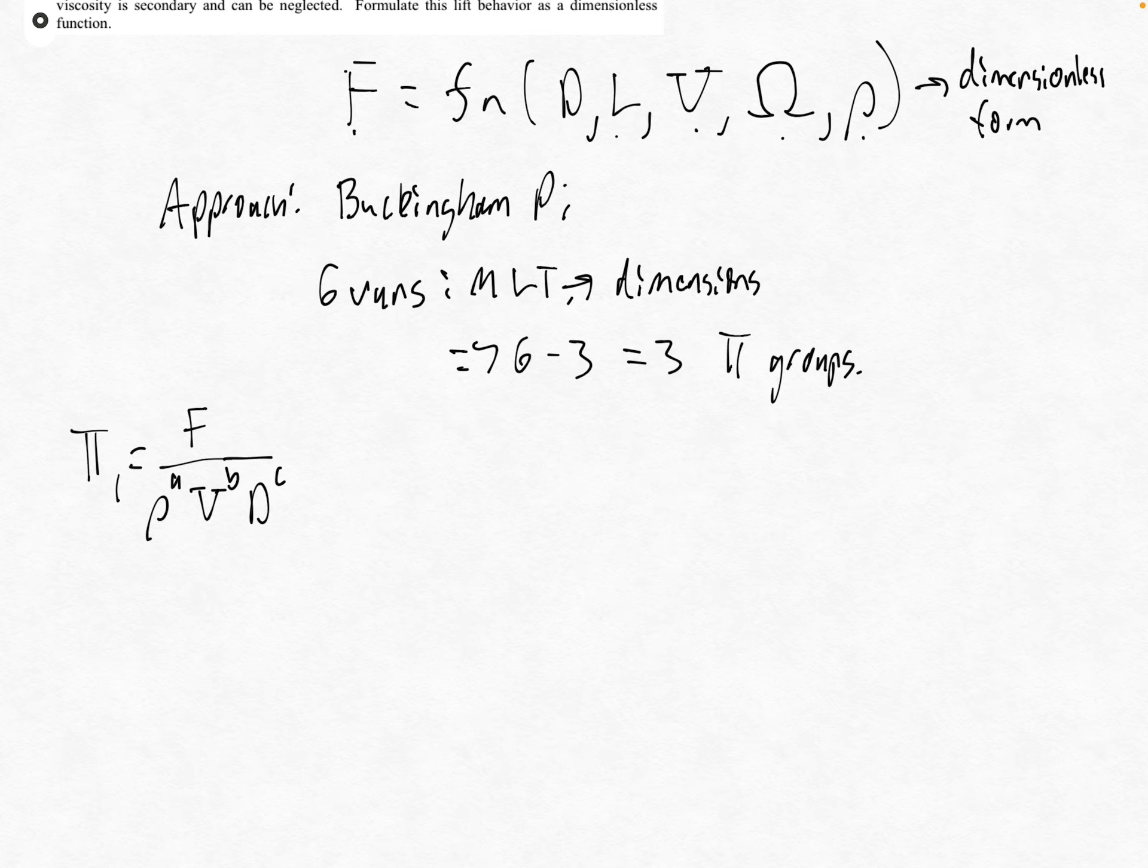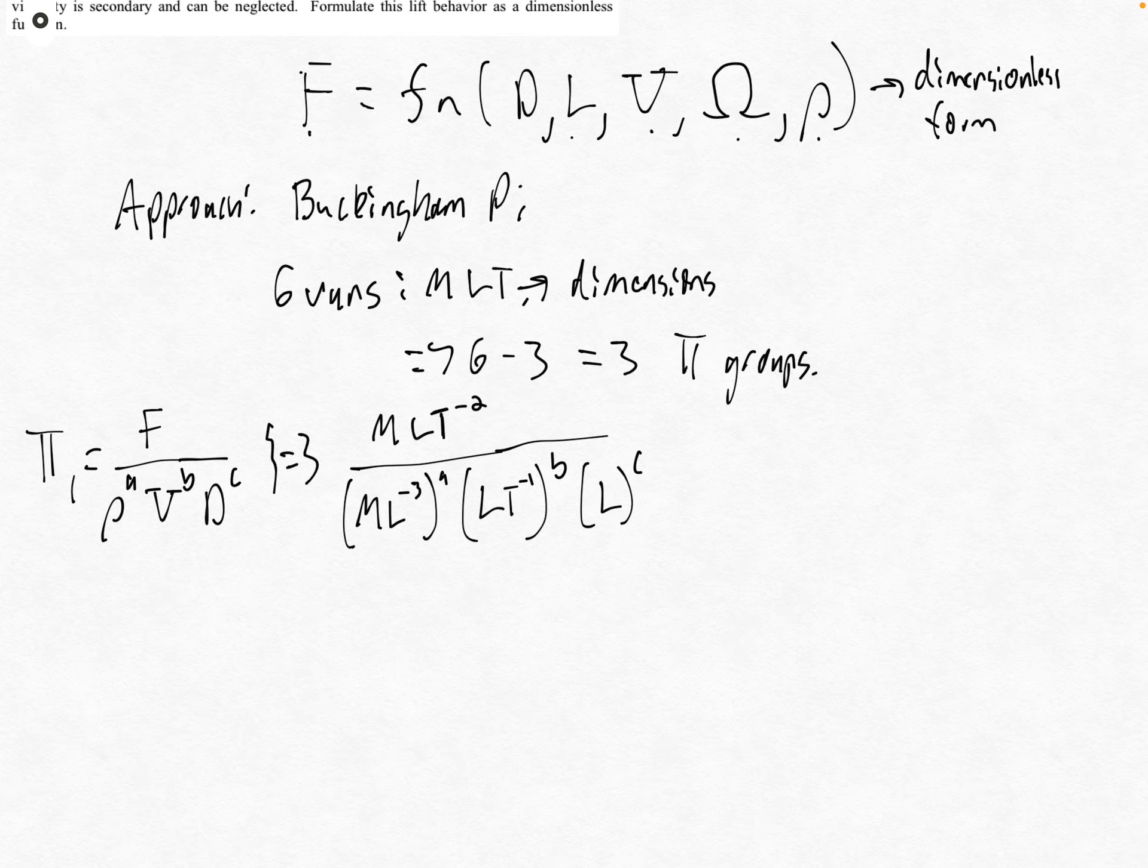To formulate this, we consider the dimensions of each term. Force is MLT to the minus two (remember F equals ma, mass times acceleration). That's going to be non-dimensionalized by ML to the minus three raised to power a, times LT to the minus one raised to power b, times L raised to power c. Now we can formulate equations to cancel out each dimension between the numerator and denominator.